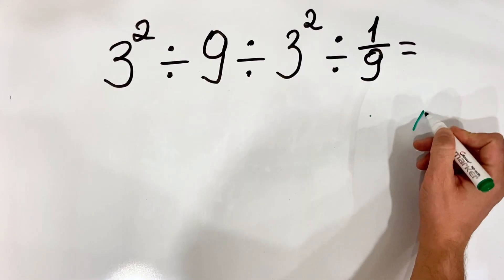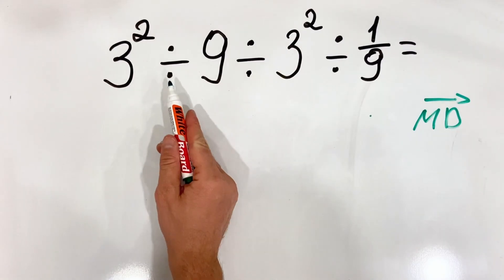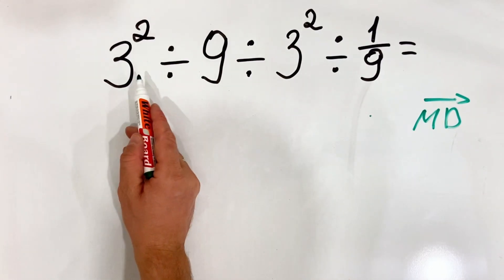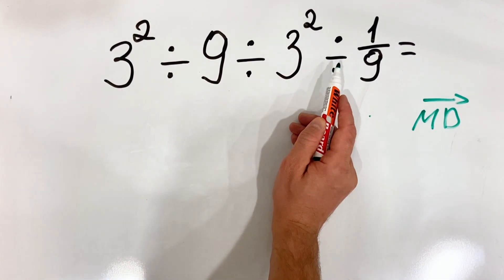When we have multiplication or division, we must do it from left to right. In this case we have only division, therefore we're going to do it from left to right. We start by this division, then this division, and this division.